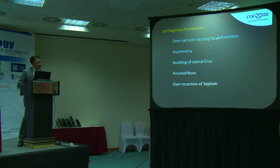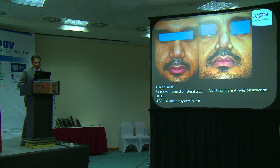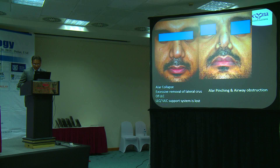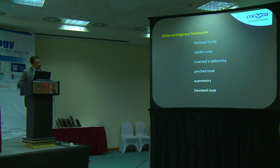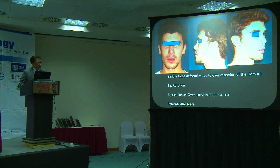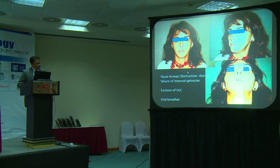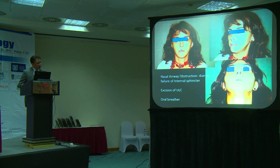In the cartilaginous framework, the commonest problem is deformity due to excess removal of the lower lateral cartilage or sometimes the upper lateral cartilage, causing functional and aesthetic problems. In one case, the lateral crura of the lower cartilage was removed excessively to thin the ala, and the patient developed a collapsed nostril on inhalation. For bony and osteocartilaginous problems, common issues include either a residual hump or, more often, over-excision causing saddle nose or inverted-V deformity. One example shows over-resection of the dorsum causing saddle nose deformity with excessive tip rotation. Over-resection of both upper and lower lateral cartilage can also cause a functionally useless nose — one patient became a mouth breather and required internal nasal valve reconstruction to improve the airway.